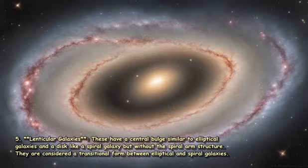5. Lenticular galaxies: These have a central bulge similar to elliptical galaxies and a disc like a spiral galaxy but without the spiral arm structure. They are considered a transitional form between elliptical and spiral galaxies.